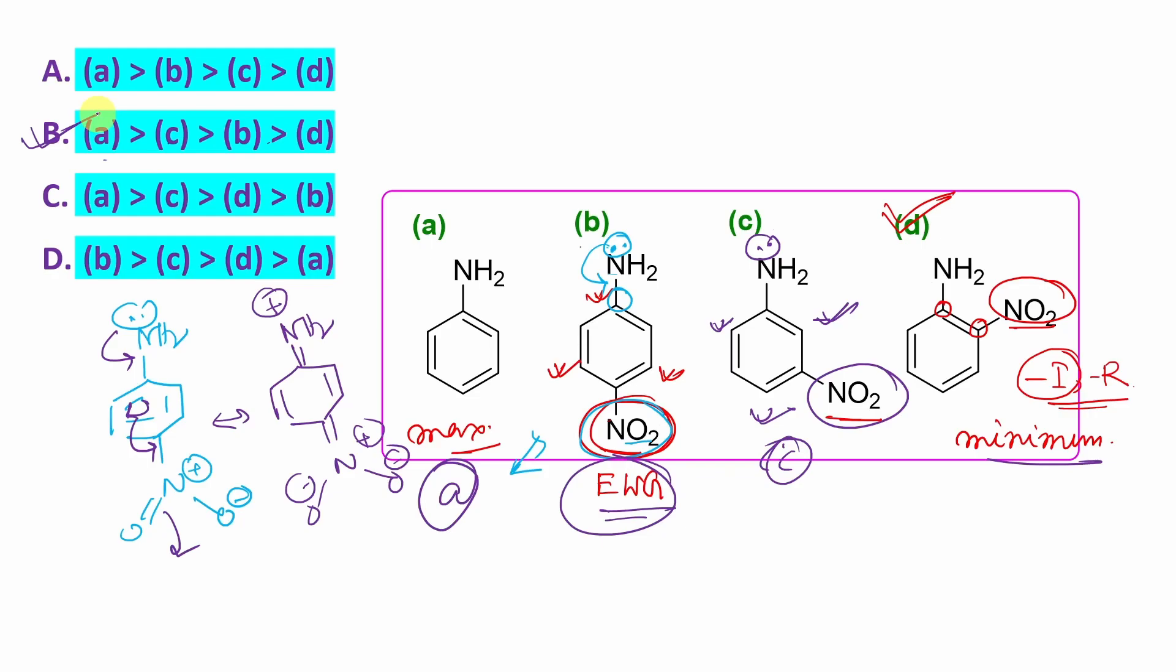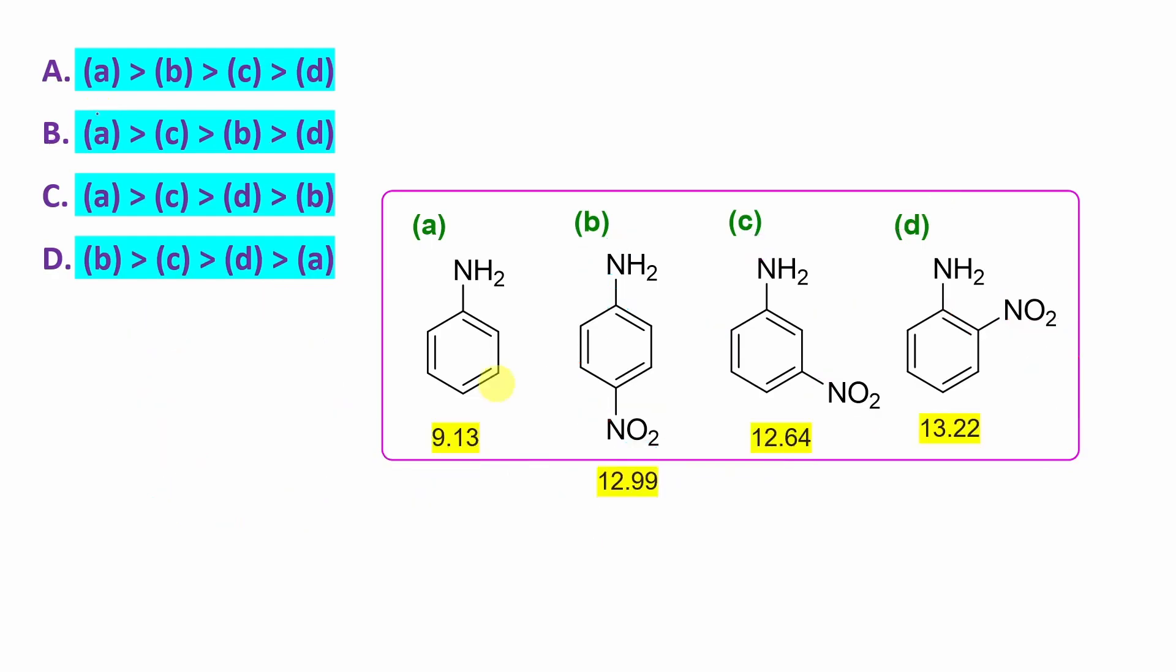Now this is the actual answer. But student, if you want to know the actual values, this PKB values, you can see aniline PKB value 9.13. If you look at this para isomer 12.99 and by the way, remember one rule, lesser the PKB, higher the basicity. The concept is like pKa, lesser the pKa, stronger is the acidity. Here PKB, so lesser the PKB, higher the basicity.